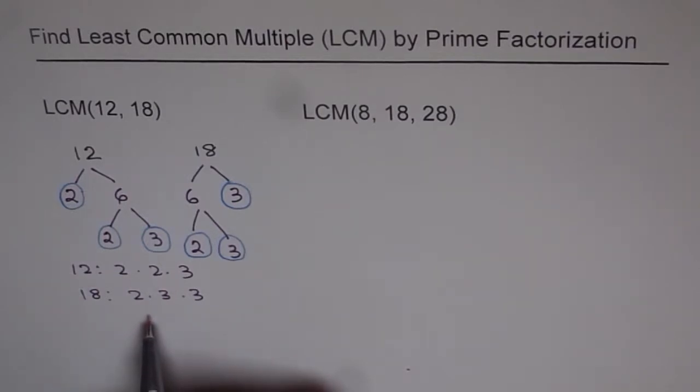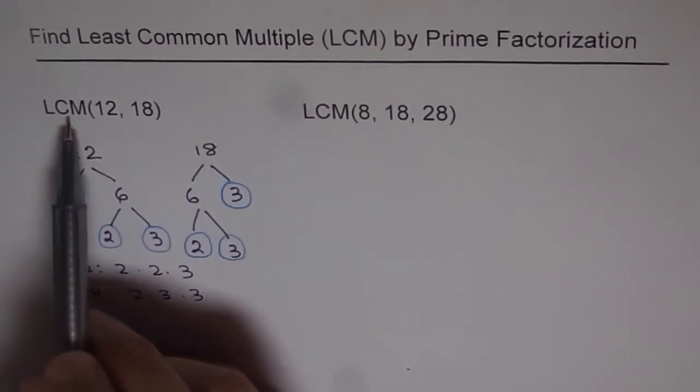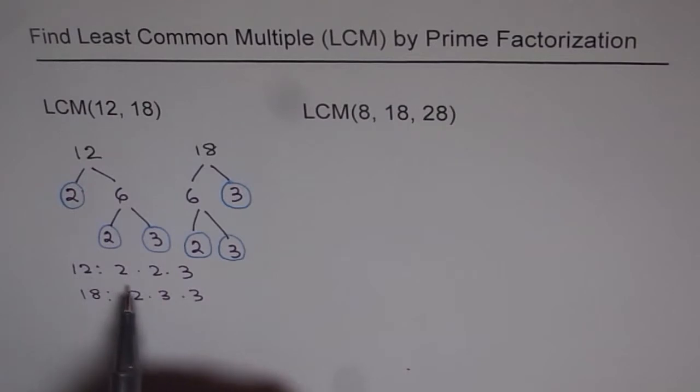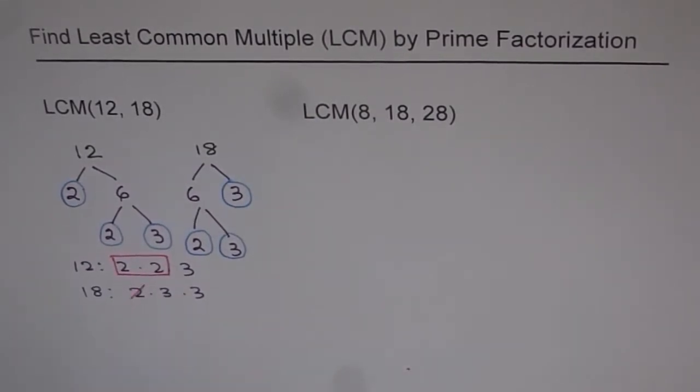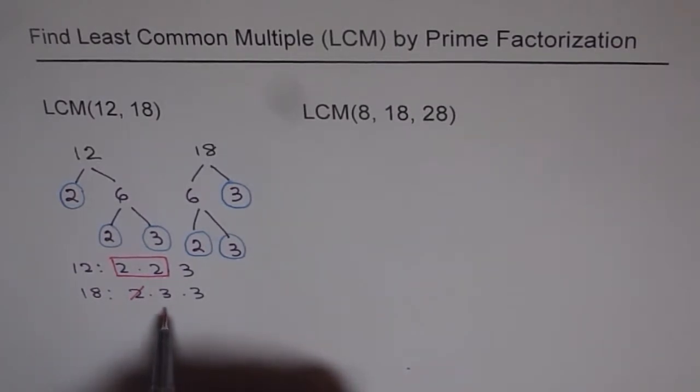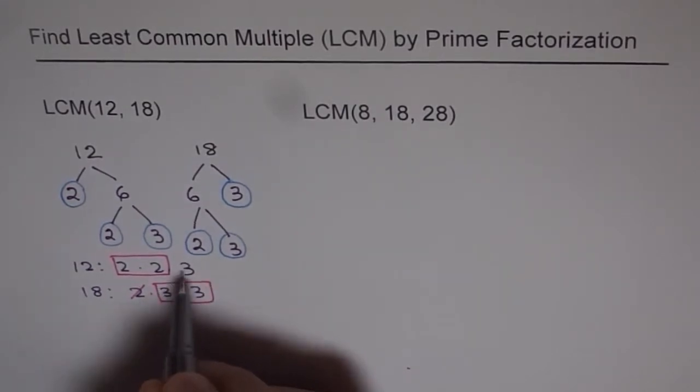We start with the least factor. The least factor is 2. We basically have 2 and 3 as factors of these numbers. And we will look for where we see more of 2. Where do you see more? Select those. We see 2, 2's here. So, we will select these 2's and disregard the other 2. Now, we look for 3's. Where do you see more 3's? In 18. So, we will select these 3's and discard the other one.